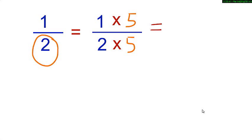Now look carefully at the numerator. We know 1 into 5 is equal to 5. Look at the denominator. 2 into 5 is equal to 10.